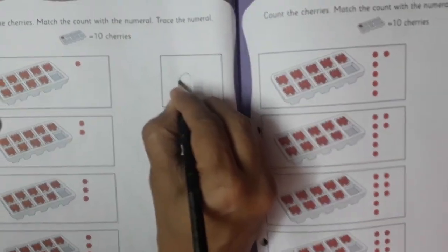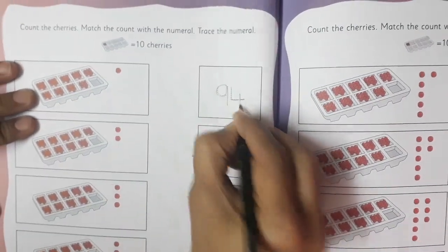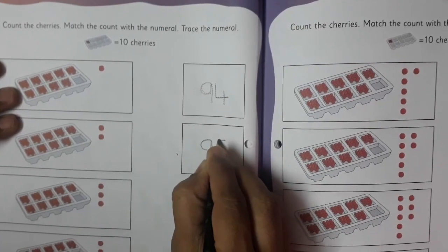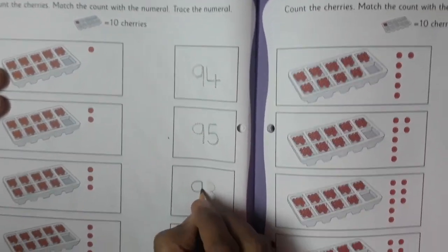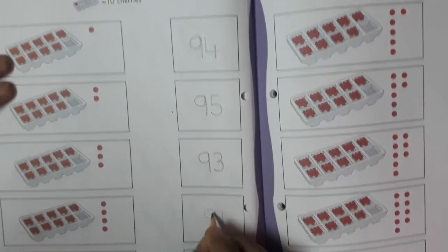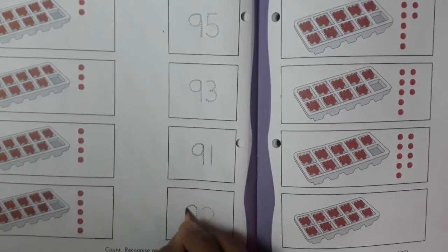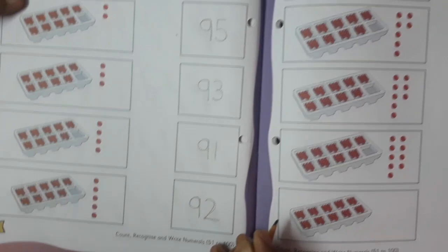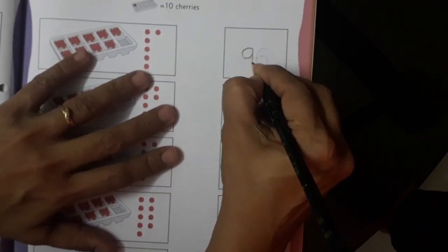Here I am going to trace all the numerals: 94, 94, this is 95, 95, 93, 93, 91, 91, and 92, 92. Yes, on this page also we will complete 96.